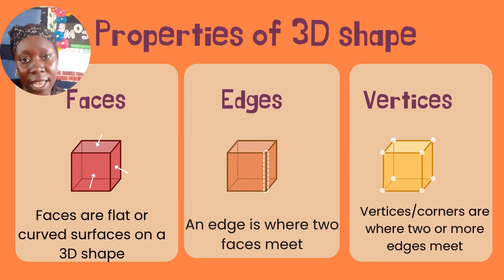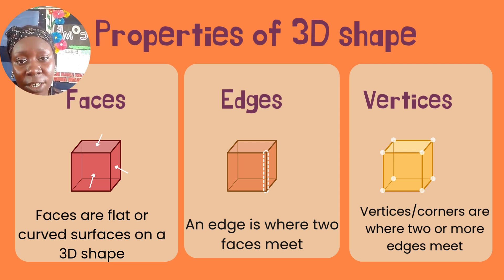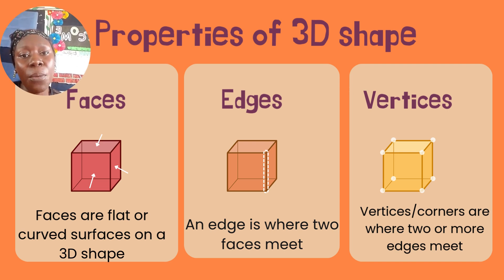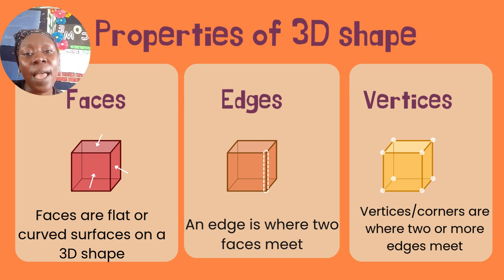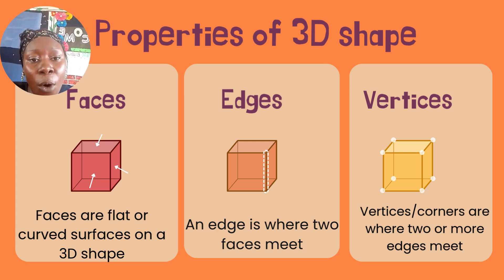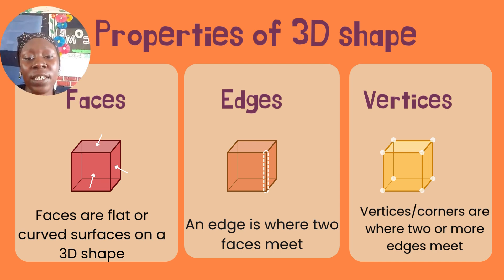The properties of 3D shapes include faces, edges, and vertices. Faces are flat or curved surfaces on a 3D shape. An edge is where two faces meet. A vertex, also called a corner, is where two or more edges meet.